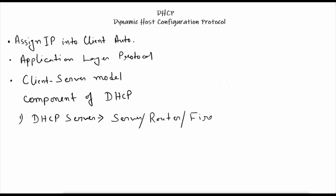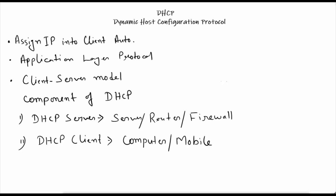The second component is the DHCP client. Any device that is requesting an IP address from the DHCP server is a DHCP client. This can be a computer, mobile, switch, Wi-Fi router, or any other device.